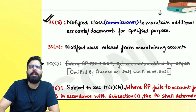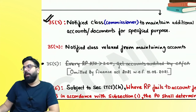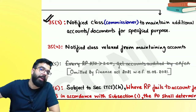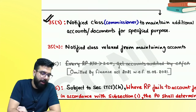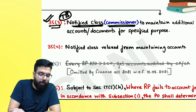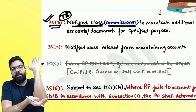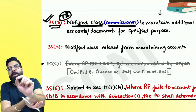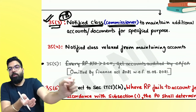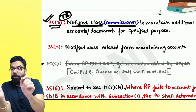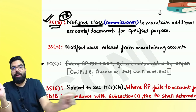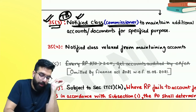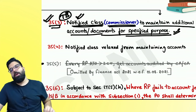Section 35.3: If the Commissioner wants, he can notify a class of persons and tell them to maintain additional accounts or documents for specified purposes. For example, he could tell teachers to maintain accounts of their daily timetable. This is just a power with the Commissioner — as of now, nothing has been notified. Section 35.3 also allows the Commissioner to relax certain people from maintaining specific accounts.